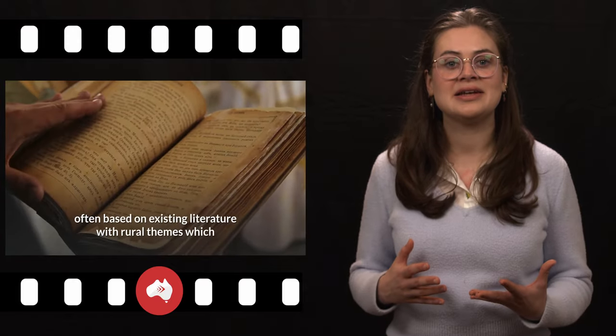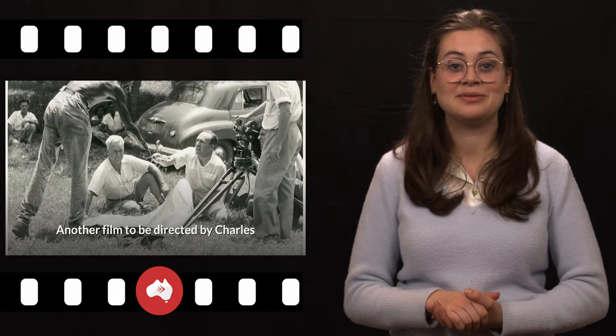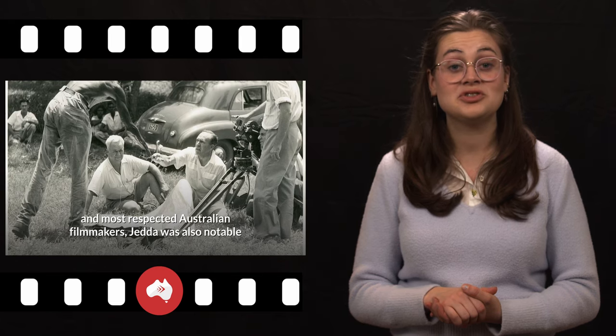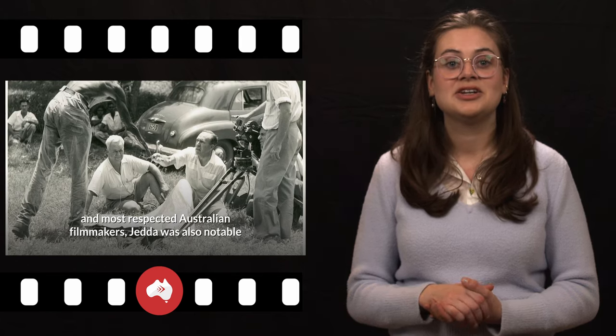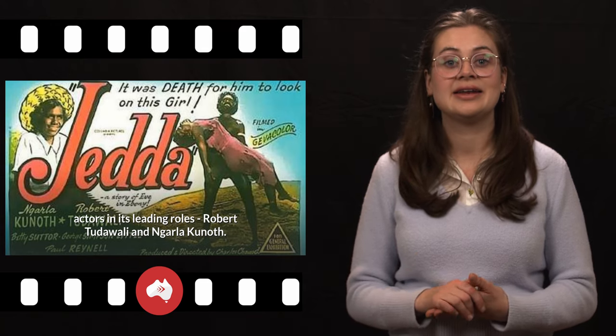Throughout the 1950s, there was a noticeable trend of British companies teaming with Australian ones to make a slew of movies, often based on existing literature with rural themes, which would showcase the unique Australian outback landscape. The film Jedda, which was the first in the region to be shot in color, is one such example and was shot in 1955 in a remote part of the Northern Territory. Another film to be directed by Charles Chauvel, who had become one of the busiest and most respected Australian filmmakers. Jedda was also notable as being the first film to have Indigenous Australian actors in its leading roles, Robert Tudawali and Ngarla Kunoth.